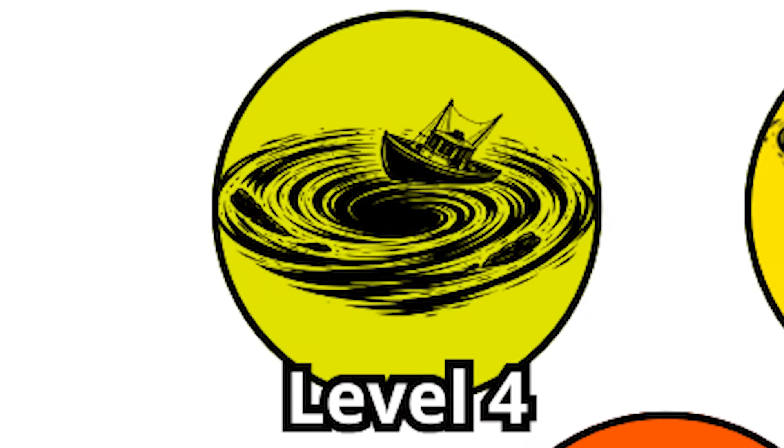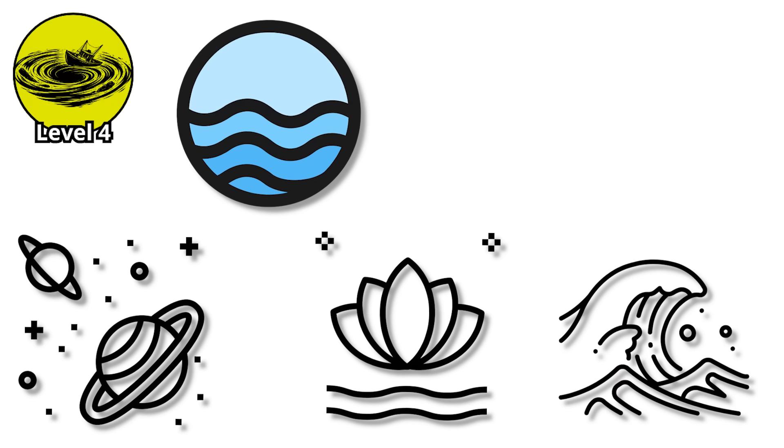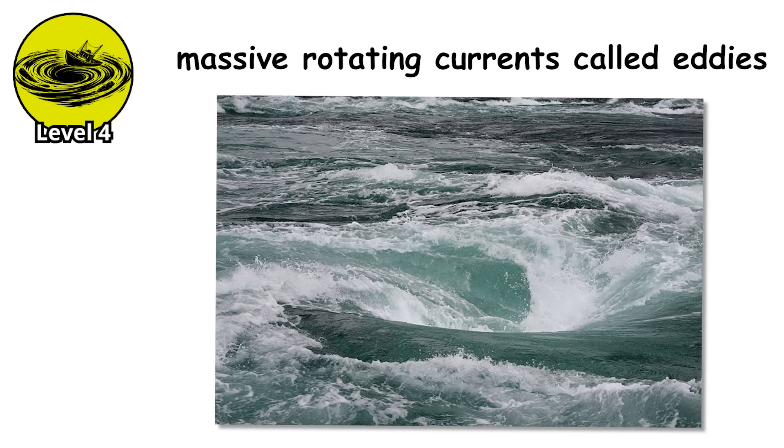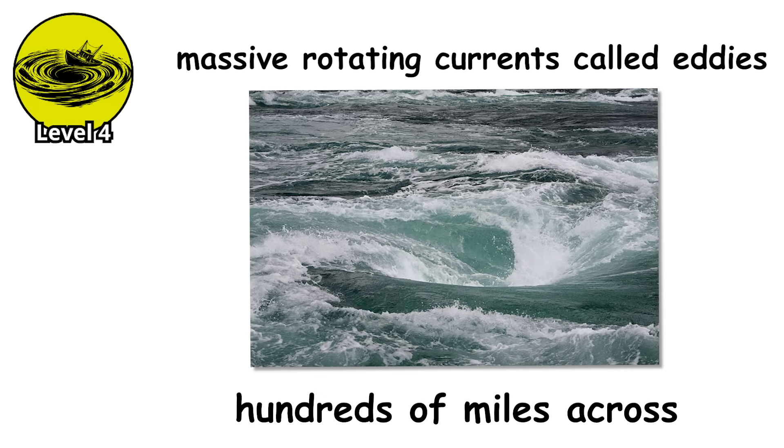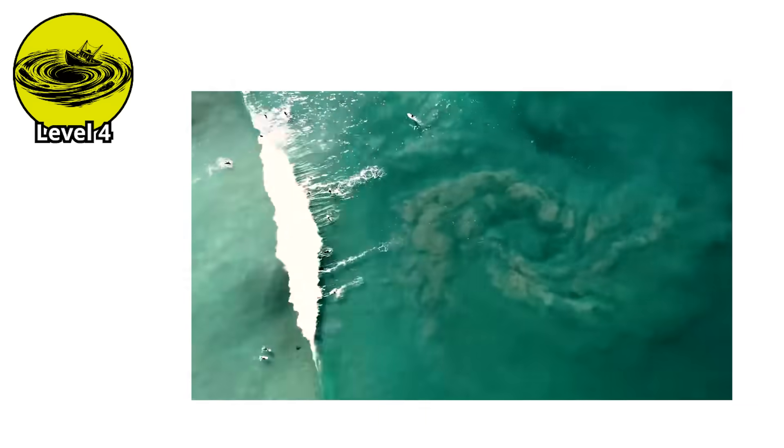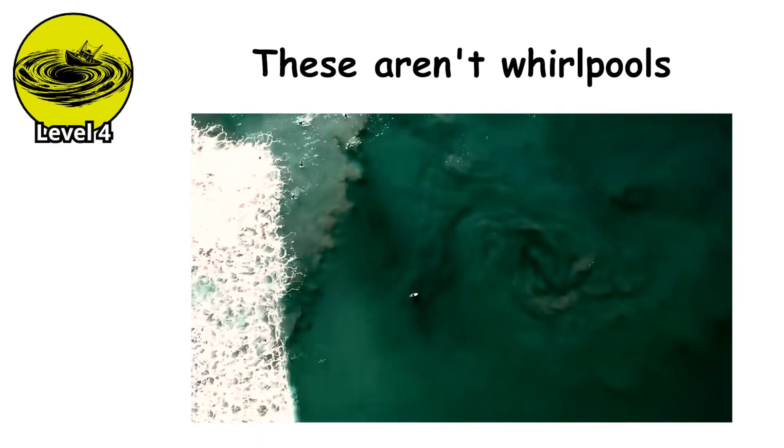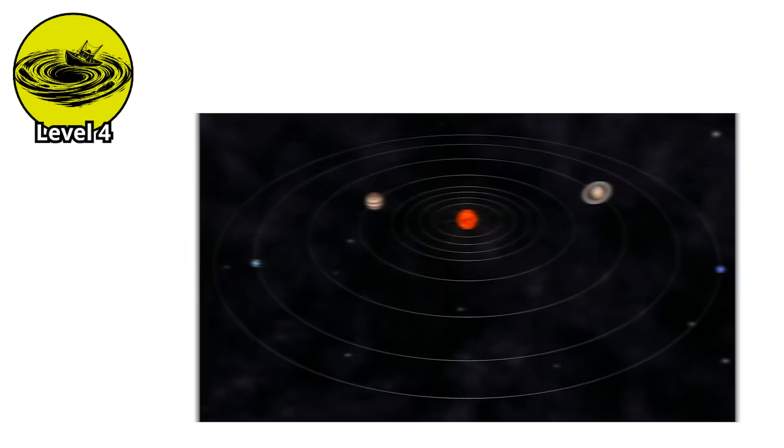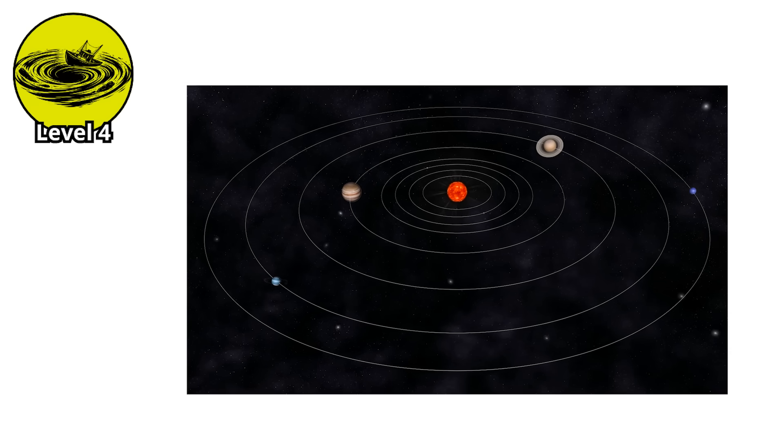Level 4. From space, the ocean looks calm, blue, peaceful. That's a lie. The ocean is full of massive rotating currents called eddies, some of them hundreds of miles across, spinning slowly but with incomprehensible power. These aren't whirlpools in the traditional sense. No visible vortex, no dramatic spiral you can point to. But they're the same phenomenon scaled up to planetary proportions.